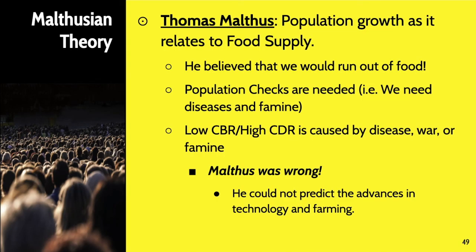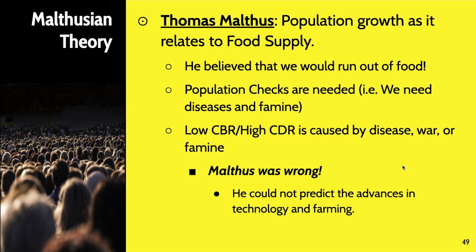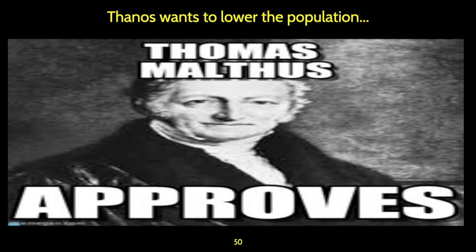Thomas Malthus was a theorist who looked at the world like this: he said that population growth is just connected to our food supply, and he thought that every population is going to run out of food. When it comes time for that, these population checks are actually necessary — we need diseases, we need famine, we need natural disasters because it keeps the population in check. That's a really twisted way of looking at the world, but this is a true theory. And his theories have been coming up a lot more lately. The thing is, he came up with these theories a long, long time ago and couldn't predict all the advancements in medical technology and farming technology. So Malthus was kind of out of his reach there, and his theories have been proven quite inaccurate because of everything he could not predict.